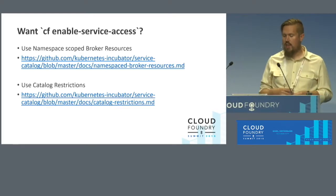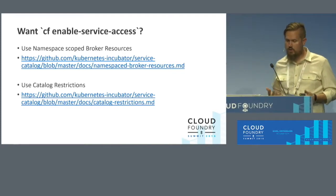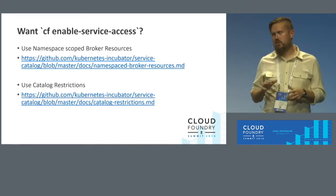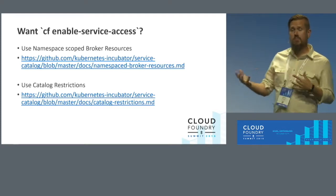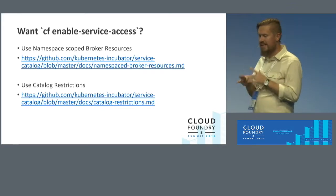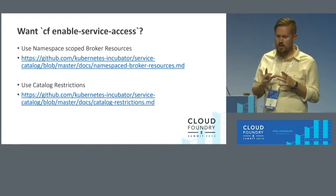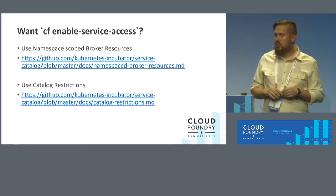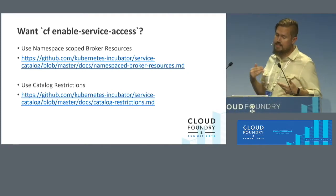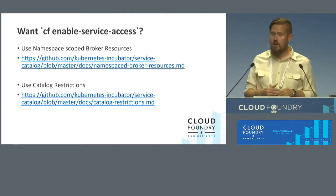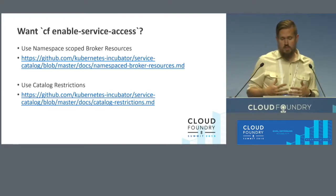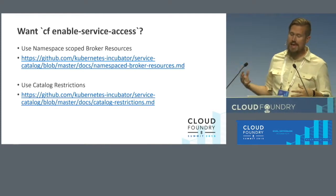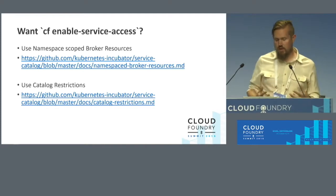You can get that CF enable-service-access-like experience if you're using namespace broker resources. Another feature is catalog restrictions. One concept in Kubernetes is a label selector — when you're trying to target a service or list things in a certain way, you can do filters. We added that concept to Service Catalog as well, so you can do things like: give me only the basic plans or give me only the free plans, and it will list those as a filtered subset. Combining namespace broker resources with catalog restrictions, you get that same functionality.